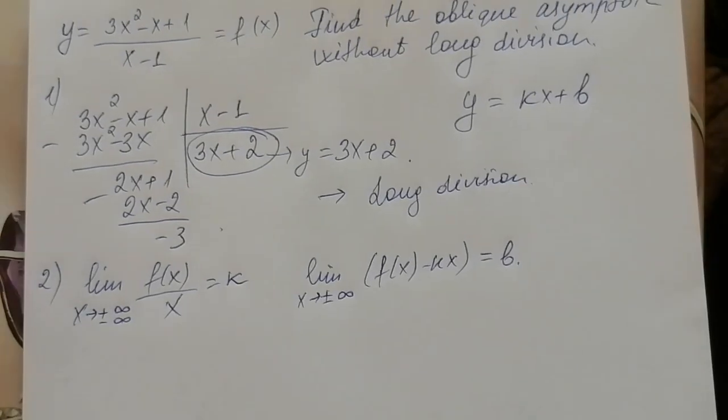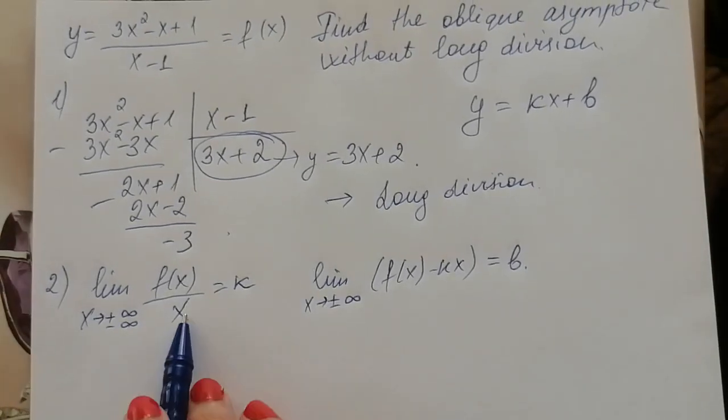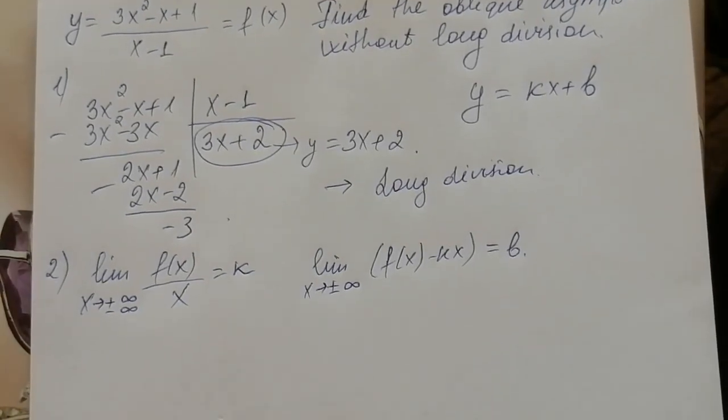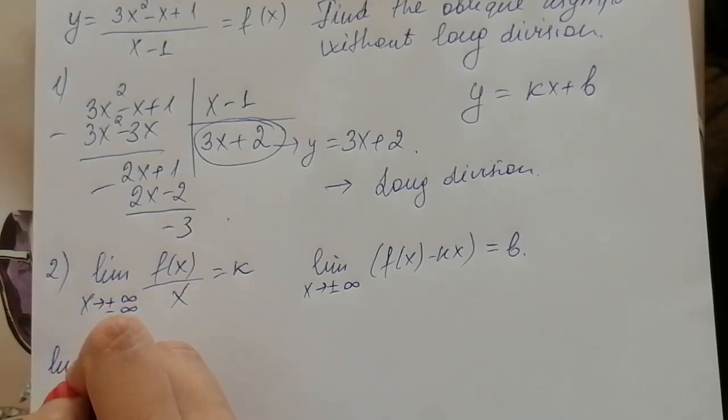So in this case let's find first k then find b. Limit of x tends to plus minus infinity.